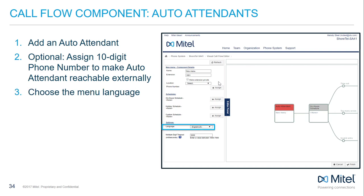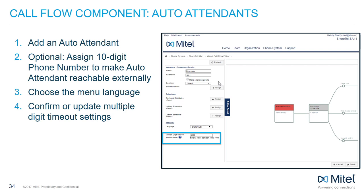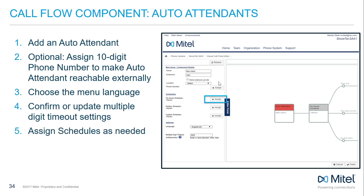Assigning an external number is a particularly important step for any auto attendant that you want to be reachable by customers, as many companies utilize an auto attendant to greet and handle incoming calls to the main number. The multiple digit timeout setting establishes the amount of time the system waits for an additional digit to be pressed before the timeout is reached. This also ensures the auto attendant recites system menu prompts in the correct language.